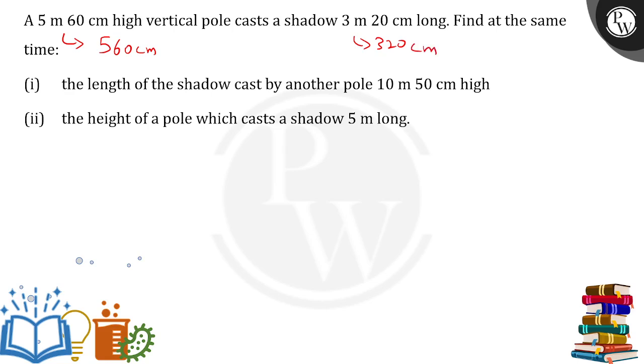Correct. So over here, the relation given to us is 560 divided by - now the length of the shadow cast by another pole, 10 meter 50 centimeter, that will be what? 10 meter 50 centimeter.